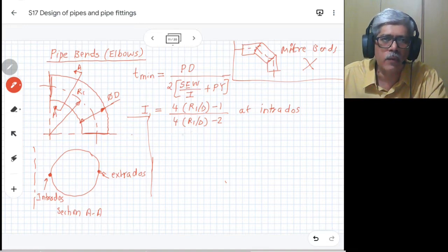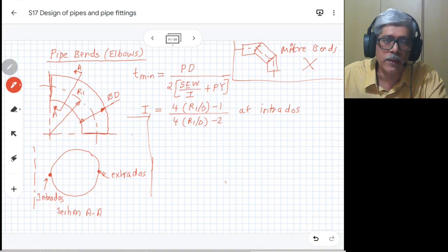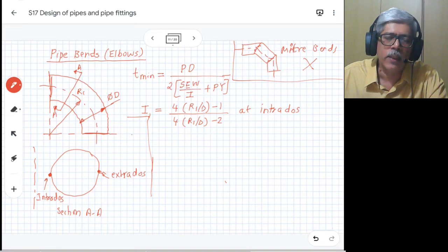The question will come to your mind: why do we have to calculate at two sides? There is a reason. Once we get both the factors, you will realize that the required thickness is maximum at the inside radius, that is at intrados. However, during the forming operation, because of the forming...